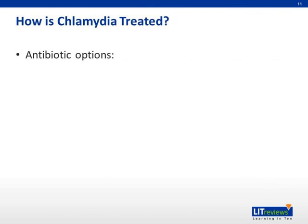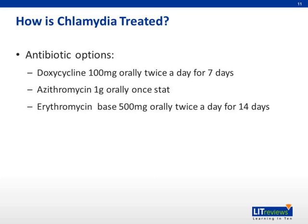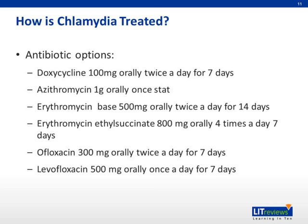There are several antibiotic options for the treatment of chlamydia infection: Doxycycline 100 mg orally twice a day for seven days; Azithromycin 1 g orally once; Erythromycin base 500 mg orally twice a day for 14 days; Erythromycin ethylsuccinate 800 mg orally four times a day for seven days; Ofloxacin 300 mg orally twice a day for seven days; or Levofloxacin 500 mg orally once a day for seven days.